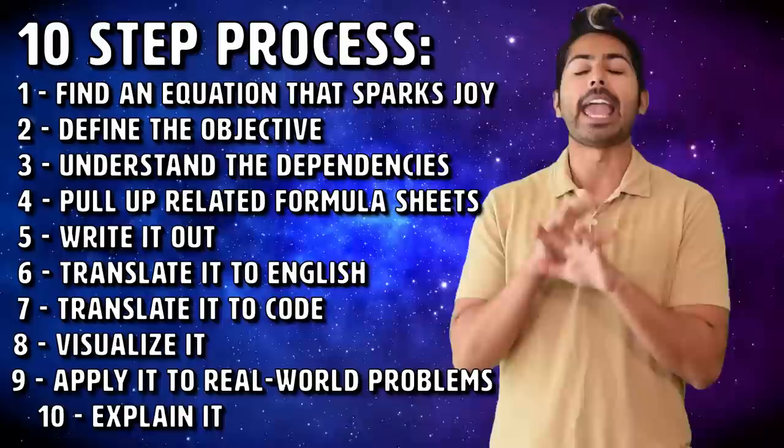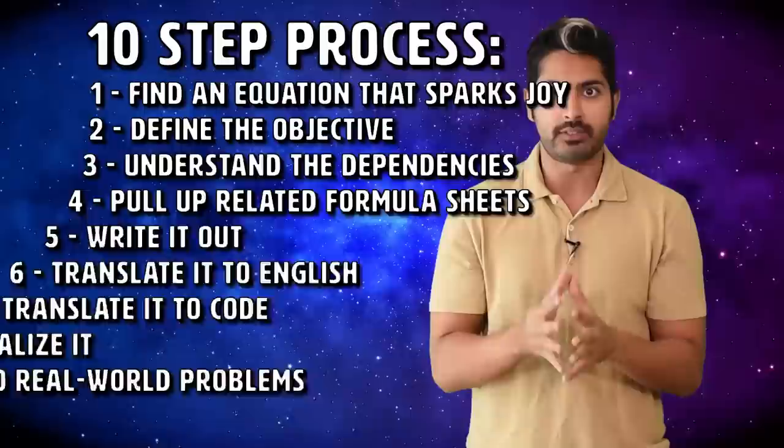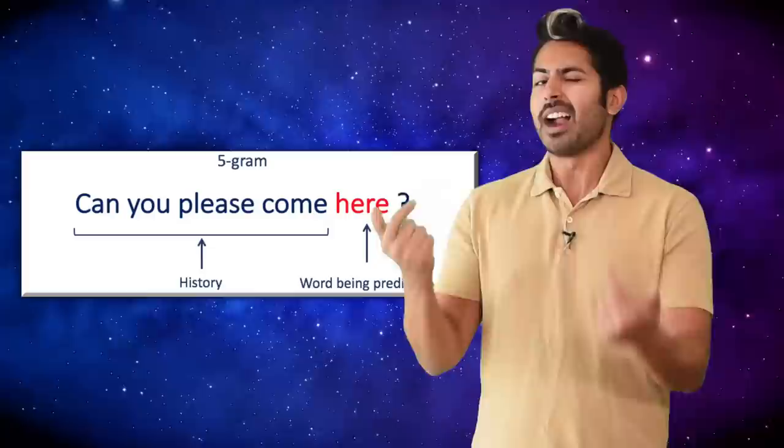I'm going to show you a 10-step process that anyone, regardless of their background, can use to understand any math equation, either in a blog post, a textbook, or a scientific paper, no matter how difficult it may seem. Then we're going to use that process to understand an equation that I find particularly interesting, a language model capable of generating coherent text, which we can then use to create our own Twitter bot that offers therapeutic advice to people with anxiety, like me.